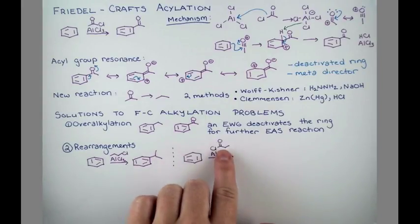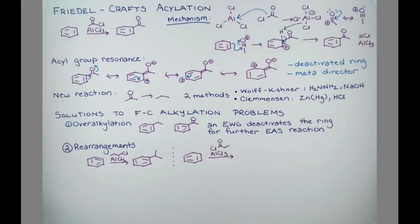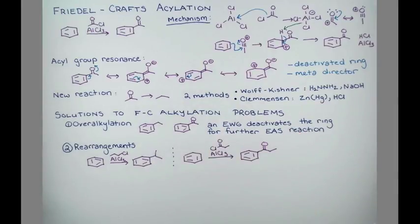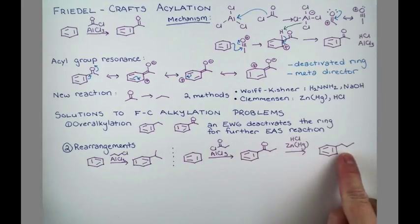If instead we acylate the ring with a 3-carbon acid chloride, we can get a linear product. Now, we can apply one of the reductions that we just learned to make it into the straight chained alkyl compound. So in a couple steps, we can get to straight chained alkylated compounds that weren't possible to make with the Friedel-Crafts alkylation reaction.